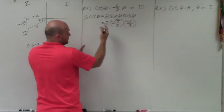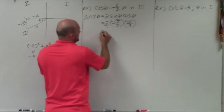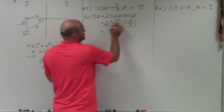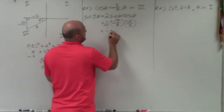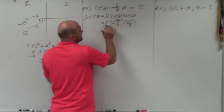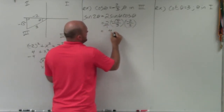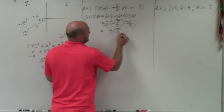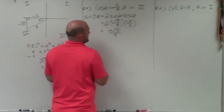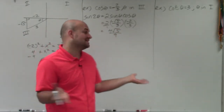Now we simply multiply across. So 2 times negative 2 is negative 4, but negative 4 times negative square root of 5 makes it positive. So the result is positive 4 square root of 5 over 9.